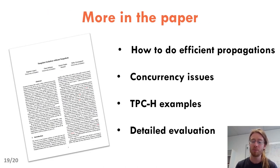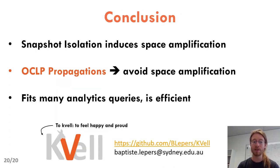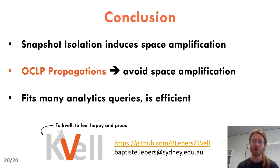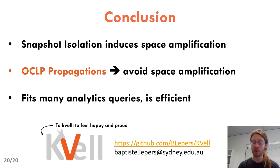In the paper, we have more results: we explain how to perform efficient propagations, we talk more about concurrency issues, we have more examples of TPC-H queries ported to OLCP, and we have a much more detailed evaluation. In conclusion, we have seen that snapshot isolation induces large space overheads, especially when long queries run concurrently with an update-intensive workload. These long queries are usually analytical queries that read data once and are oblivious to the order in which they read data, so propagating items makes sense instead of versioning them. The propagation mechanism is efficient and does not induce any overhead, and propagating data can actually help speed up analytical queries. The code of our OLCP implementation is available on GitHub, so feel free to fork it. Thanks for listening.